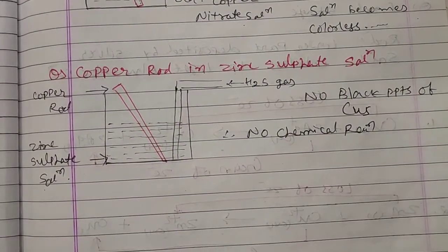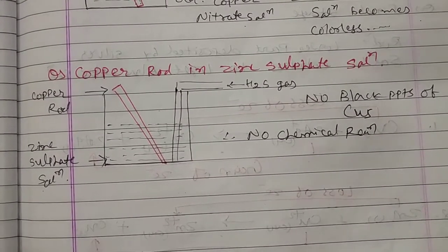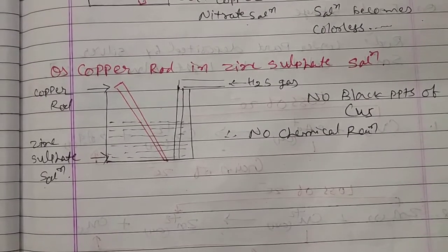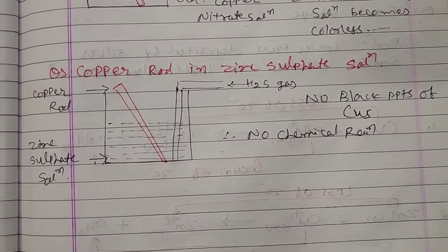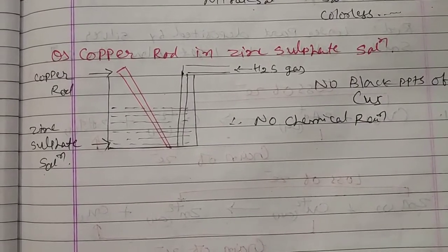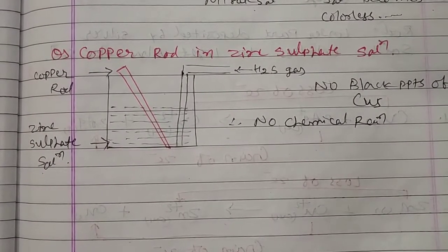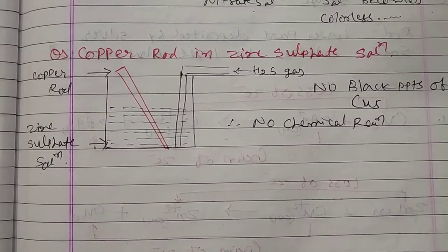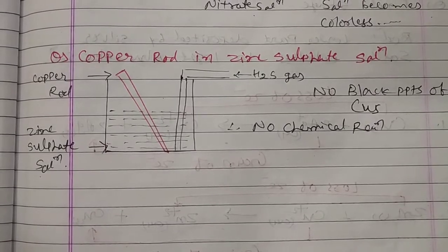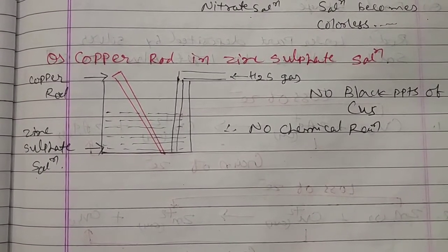We move on to the second experiment. The second experiment is a copper rod dipped in a zinc sulfate solution. The zinc sulfate solution is almost transparent, water white in color. The copper rod is initially brown. Basically, there is no chemical reaction that takes place — even if you keep it for one or two hours, there will be no chemical reaction.